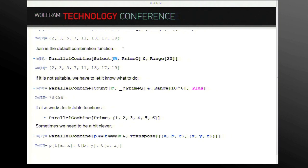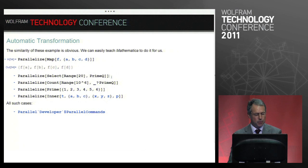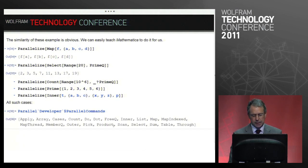So there is a function parallelize that just looks at the unevaluated input, sees it's map, so I know what to do with select, count, prime, and so on. It just works in the same way as before. These are all the functions that are handled in this way and allow you to do automatic parallelism.